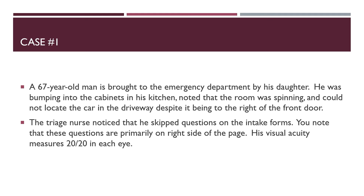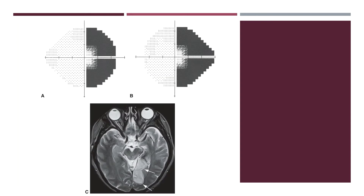A 67-year-old man is brought to the emergency department by his daughter. He was bumping into cabinets, noted the room was spinning, and could not locate the car in the driveway despite it being to the right of the front door. The triage nurse noticed he skipped questions on the intake forms, primarily on the right side of the page. His visual acuity is 20/20 in each eye; the anterior segment and posterior fundus are unremarkable. However, visual field testing shows decreased sensitivity in the right visual field of both eyes — a homonymous hemianopia — localizing the lesion to the posterior visual pathway on the left side of the brain. An MRI T2-weighted image shows an infarction in the occipital lobe as outlined by the arrows.